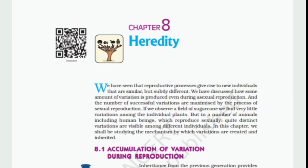We have seen that reproductive processes give rise to new individuals that are similar, but subtly different. We have discussed how some amount of variation is produced even during asexual reproduction, and the number of successful variations are maximized by the process of sexual reproduction. If we observe a field of sugarcane, we find very little variation among the individual plants. But in a number of animals including human beings, which reproduce sexually, quite distinct variations are visible among different individuals. In this chapter, we shall be studying the mechanism by which variations are created and inherited.